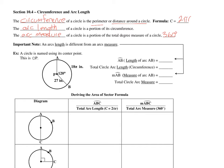Important note: an arc's length is different from an arc's measure. Looking at the diagram, this is circle P. The notation with just AB and an arc symbol above it represents the arc length. In this example, arc length AB is 18π inches, and the total arc length going all the way around the circle is simply the circumference.